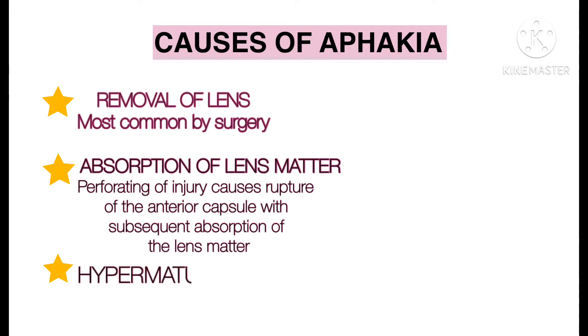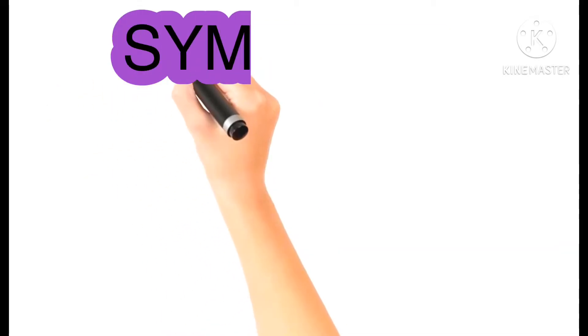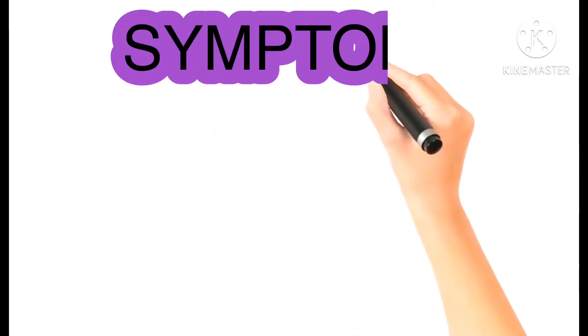Number three: hypermature cataract — this is rare, where all the lens matter is absorbed and the capsule is left behind. And for the symptoms of aphakia, we have number one: blurring of vision.